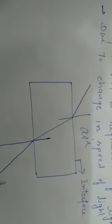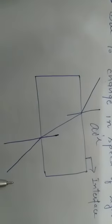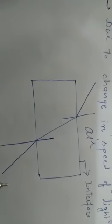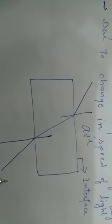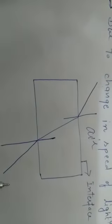In denser medium, light bends. Where will it go? I think you understand? Towards normal. And in rarer medium, it moves away from normal.